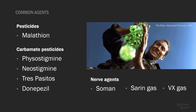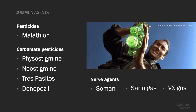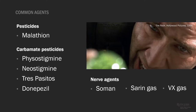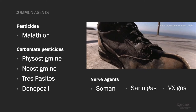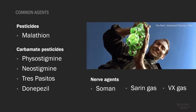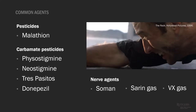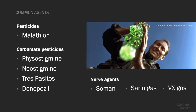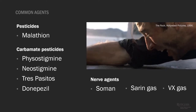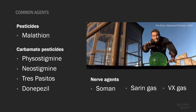Common agents causing the cholinergic toxidrome include pesticides such as malathion. Carbamates are a different category of acetylcholinesterase inhibitor, including medically important agents such as physostigmine and neostigmine, as well as a pesticide called traspi-cidos. Donepezil is used for Alzheimer's disease treatment and therapeutically increases cholinergic tone. Nerve agents or weapons of mass destruction include soman, sarin, and VX gas.